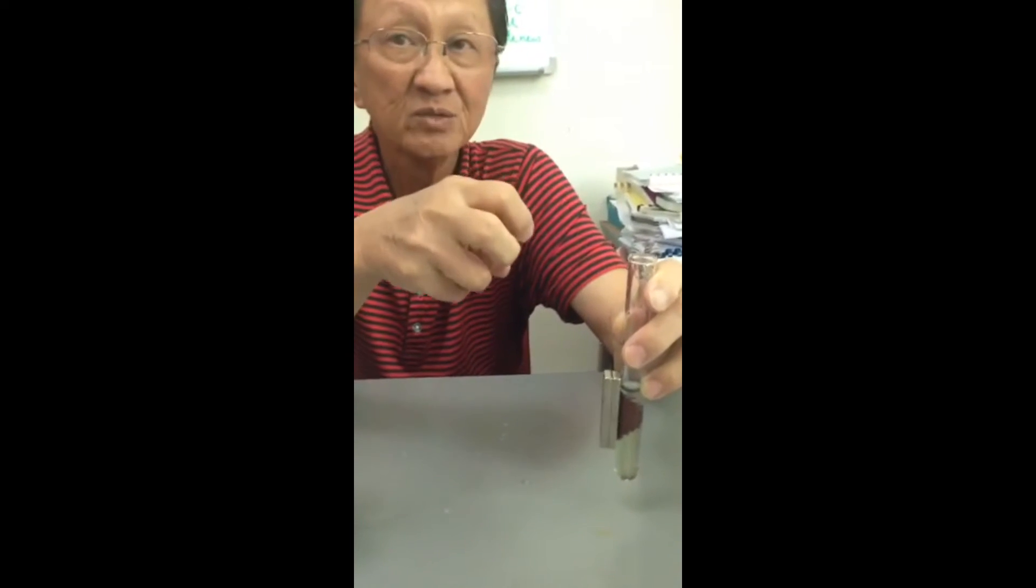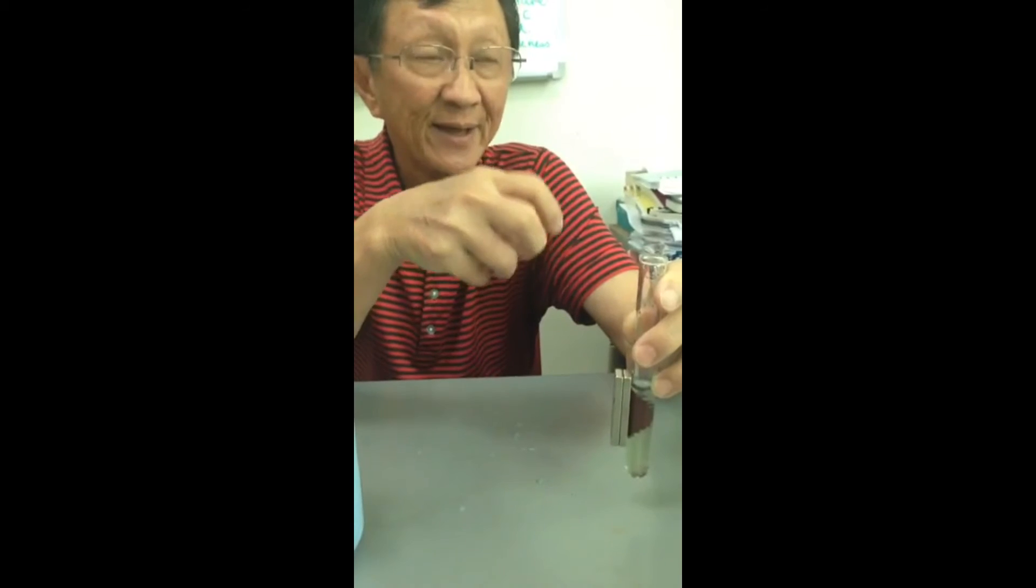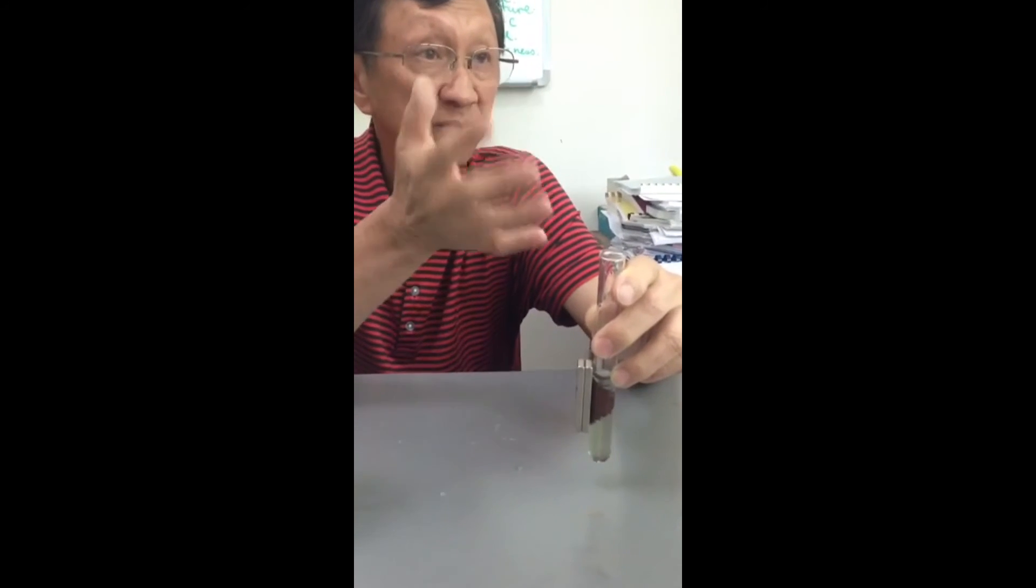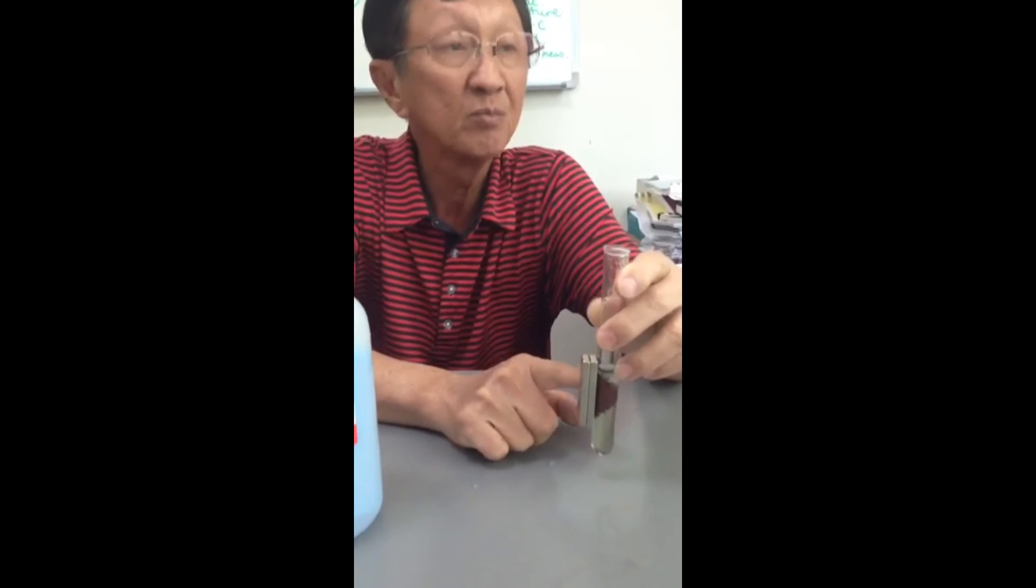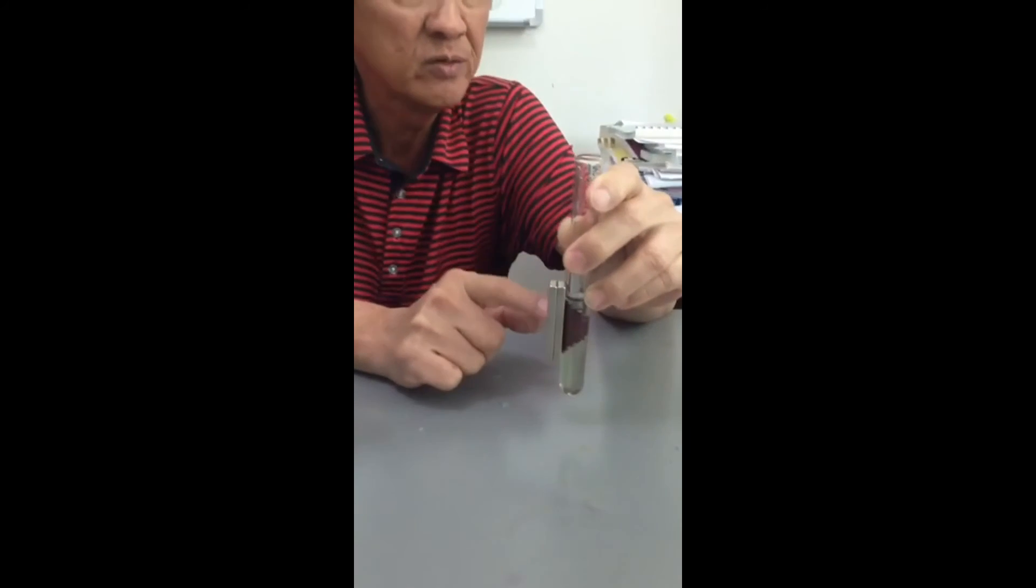Because in this reaction you have a solid reactant, which is iron filings. And then the copper comes out and coats over the iron filings, because reaction occurs at the surface of the iron filings. So it coats over, and the solid product coats over the solid reactant.